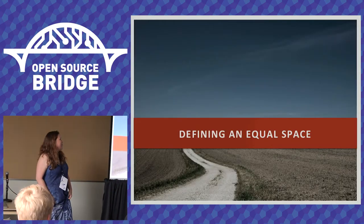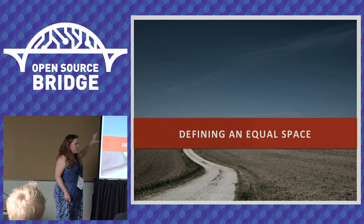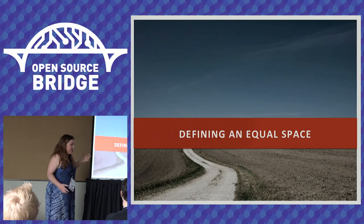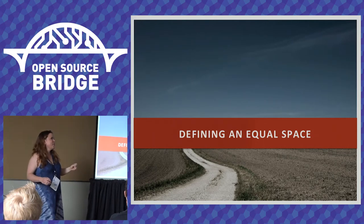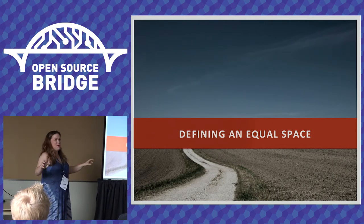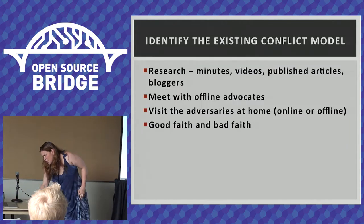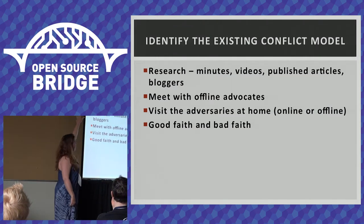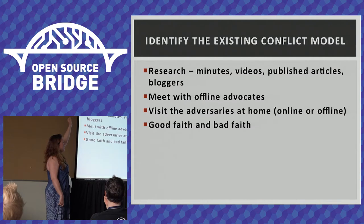How are we going to define an equal space? These two things are not equal in size but they could be equal — how do you compare an apple with an orange? Equality might not be the exact same thing for both groups. One of the things you need to do is identify the existing conflict model. If you can go do some research, that really helps. If you're going to be writing a political application, meet with offline people — people working offline with the community or hip to the issues.